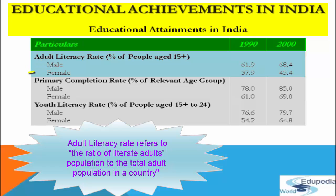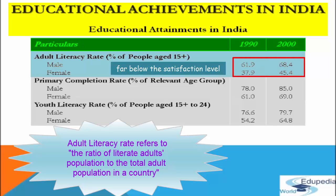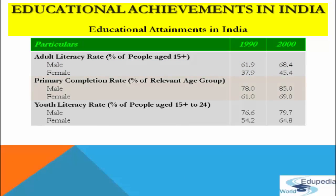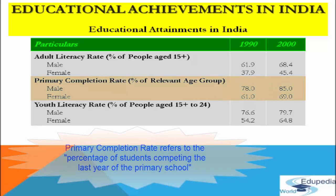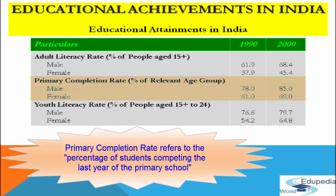In the case of females, the adult literacy rate was just 37.9% in 1990, which increased to 45.4% in 2000 — still far below the satisfactory level. Regarding primary completion rate — the percentage of students completing the last year of primary school — in the case of males it increased from 78% in 1990 to 85% in 2000.